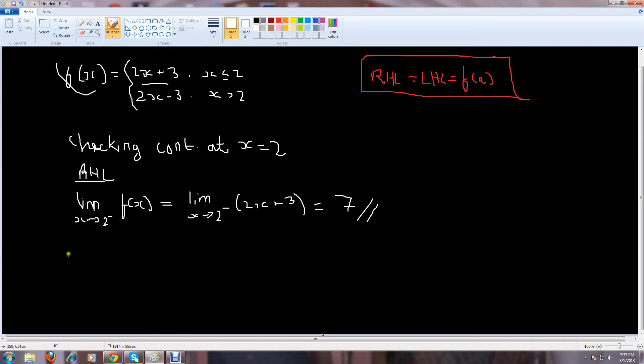Now, the second thing that you do is try to find your LHL. Now, when you want to find out the LHL, you put limit x tends to 2 plus. In LHL, you put 2 plus, whereas in RHL, you had to put 2 minus.